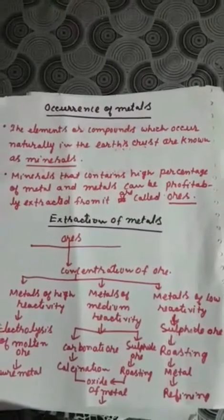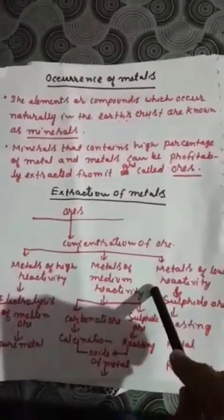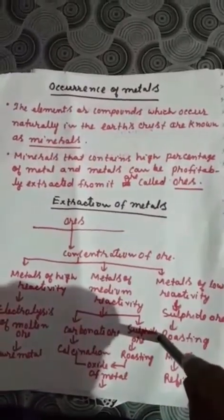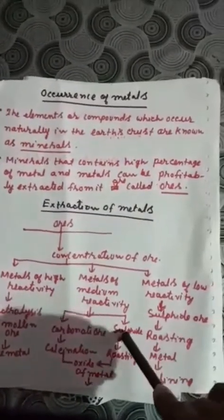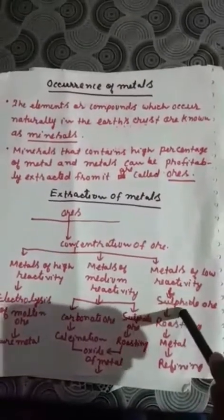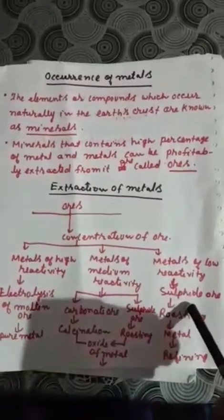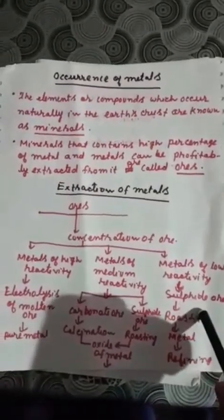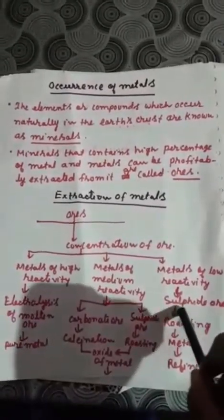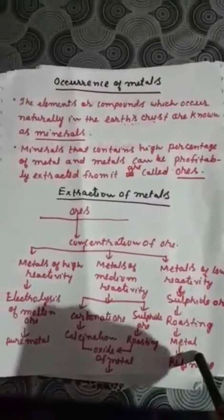When we extract a metal, first we have to concentrate the ore. Metals are classified as having high reactivity, medium reactivity, and low reactivity. Metals which are low in reactivity are found in the earth's crust as sulphide ores — for example, silver is found as silver sulphide. After getting the sulphide ore, roasting — simply heating — gives us the oxide of the metal, and then we refine it to purify it.